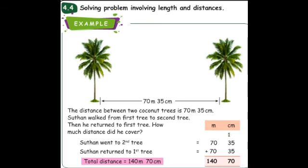70 meters 35 centimeters is the distance between the two trees, but Sultan walks it twice, so we need to add the number again. 70 meters 35 centimeters plus 70 meters 35 centimeters. As usual, we add the centimeter column first, then the meter column. Adding gives us 140 meters 70 centimeters.